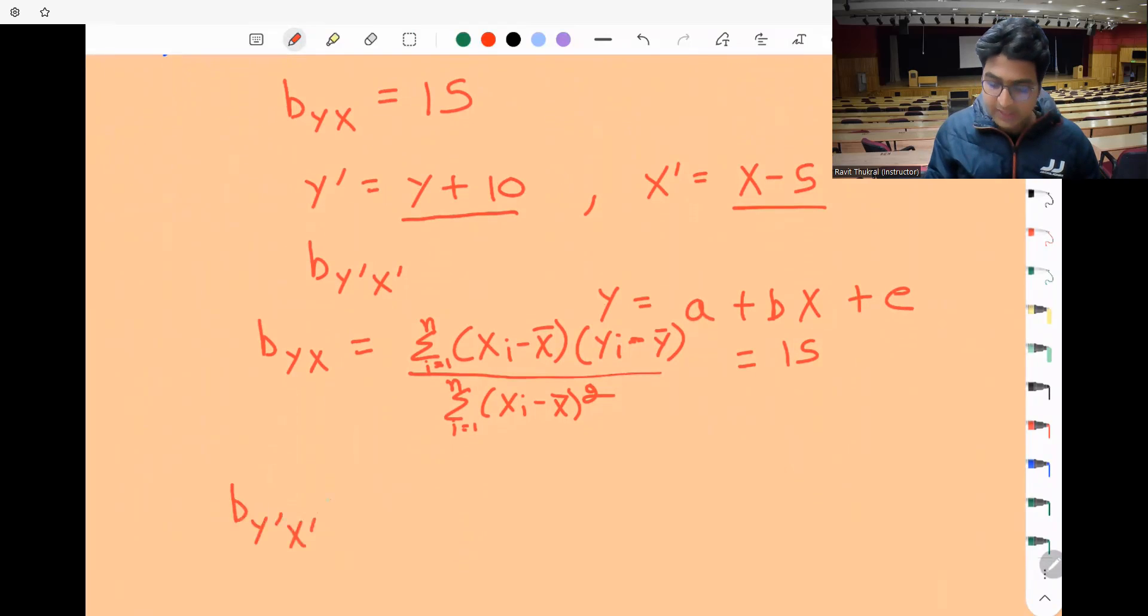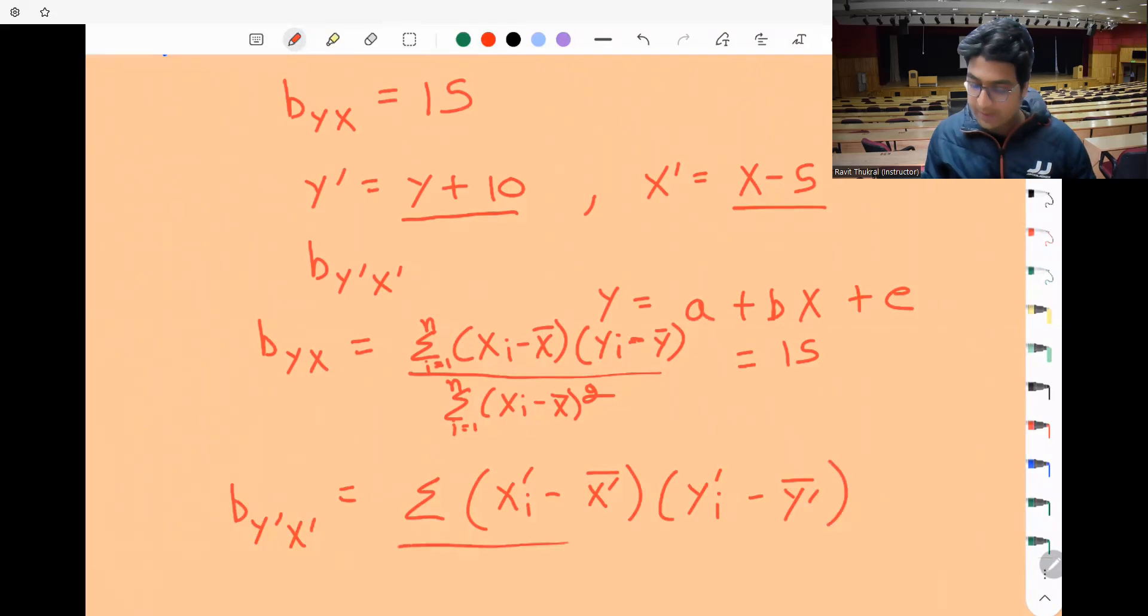Now what about b_Y'X'? Well, that is simply equal to summation (X'i - X̄')(Y'i - Ȳ') divided by summation (X'i - X̄')².